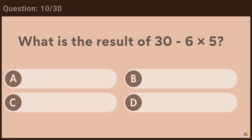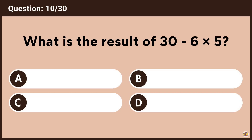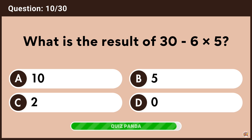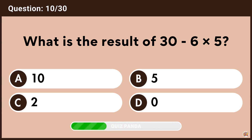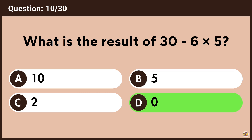What is the result of 30 minus 6 multiplied by 5? Answer D, 0.